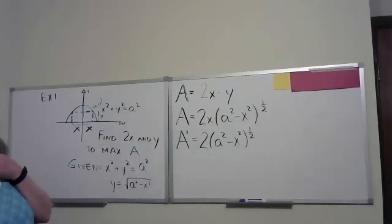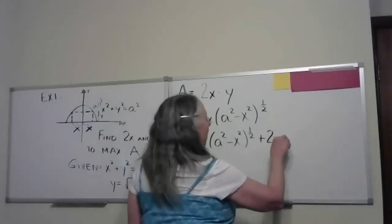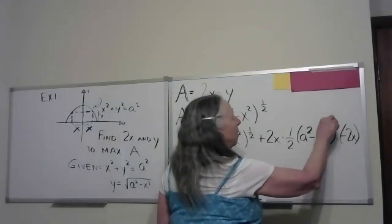So if we take the derivative of the first, we're going to get 2 times a squared minus x squared to the one-half. Alexis, should I ask you which rule we're using to do the big part of the derivative? We're using chain and product rule. So now we have plus 2x times, now we're going to use the chain rule. Alexis, why don't you take the derivative of a squared minus x squared to the one-half? It's going to be one-half times a squared minus x squared to the negative one-half, and then negative 2x. You forgot the negative one-half. There we go.